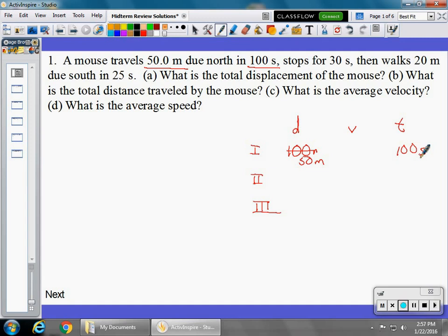For leg 2, the mouse stops for 30 seconds, so we're going to say the displacement is 0. It's not going anywhere. And that is 30 seconds.